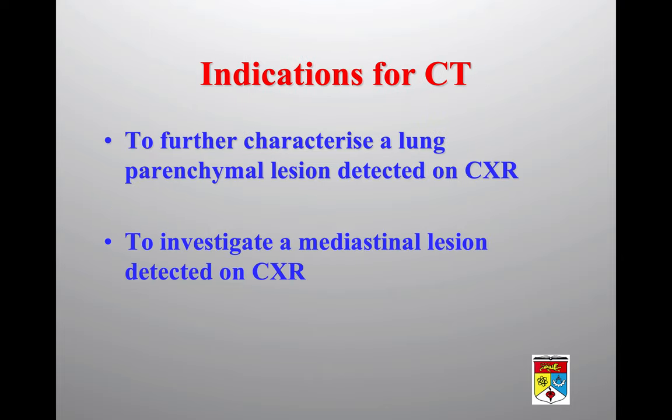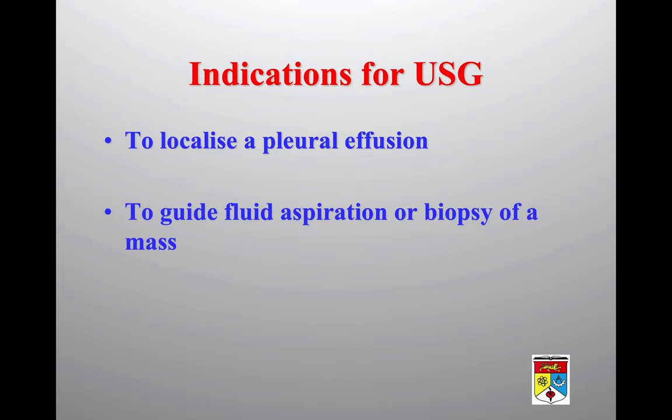Chest X-ray has a little bit of radiation, but CT scan has a lot more — there is a potential radiation burden with CT. That's why we reserve CT scan for further characterization of a lesion whenever we detect it on chest X-ray, and also whenever we see a mediastinal lesion on chest X-ray, the child will often go on to CT scan.